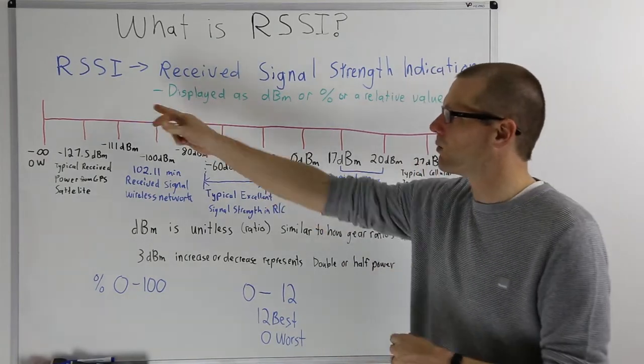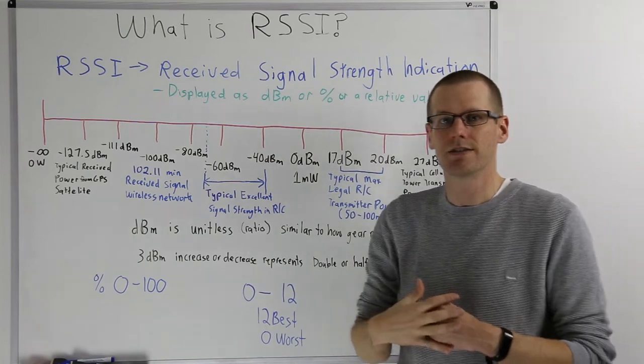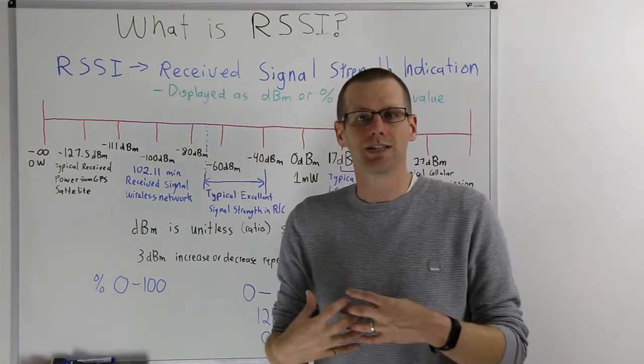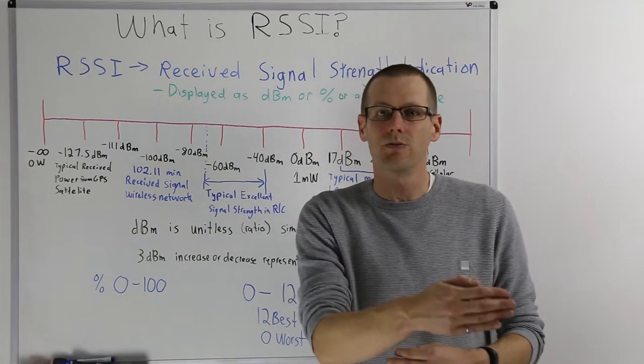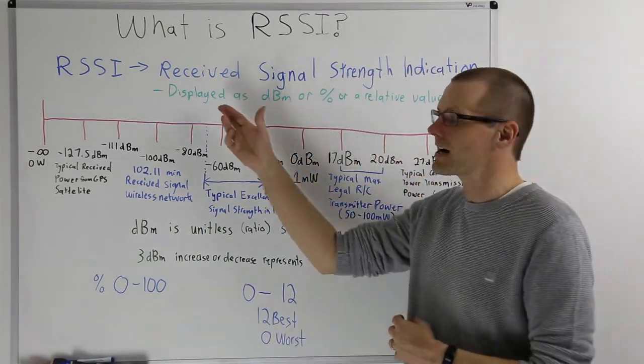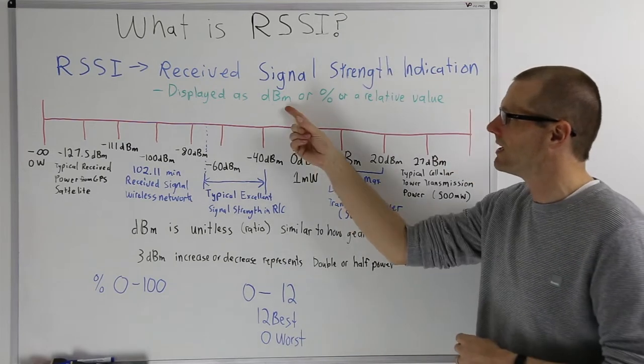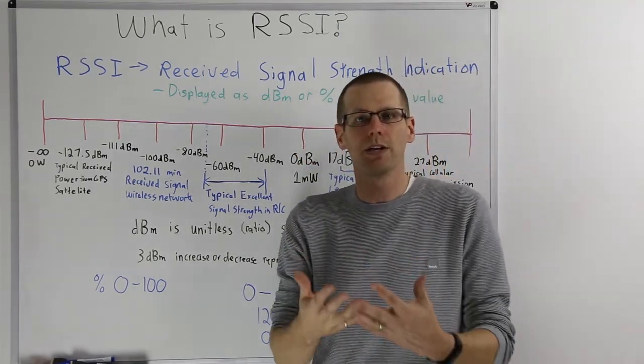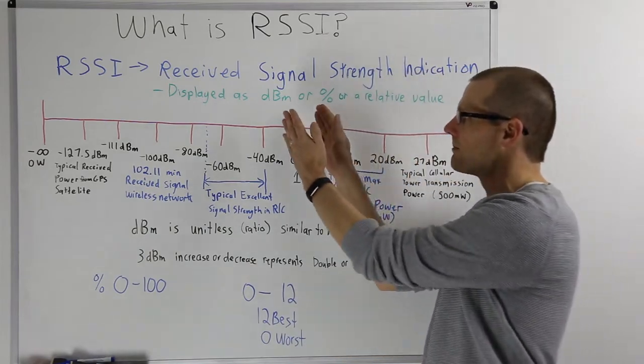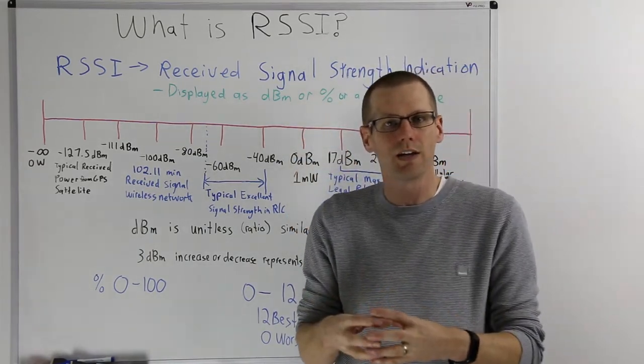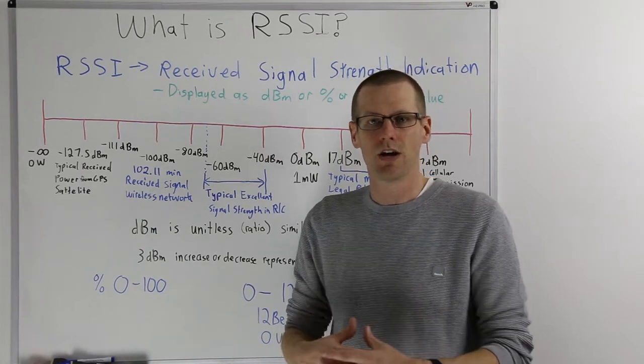Let's first start off by defining what RSSI actually represents and means. RSSI is the received signal strength indication. This is a value that the manufacturer will place on the radio to tell the user what kind of signal strength you are receiving at your radio control vehicle on the receiver side of that system. Now what's important is you can actually measure this in one specific way, but you can have values that are told to you in multiple different ways: dBm, percent, or a relative value.